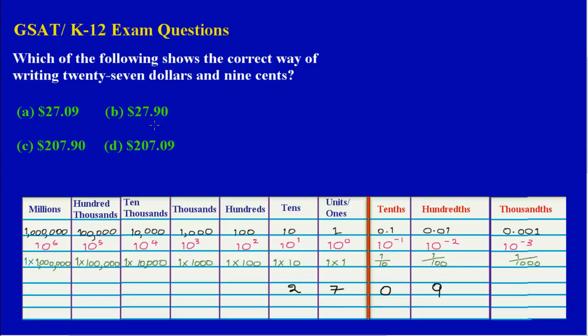So obviously, writing twenty-seven dollars and nine cents, part A would be the most appropriate answer. So let me circle that quickly. Part A would be the appropriate answer. Alright, that's it. Bye-bye.